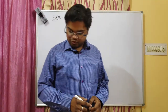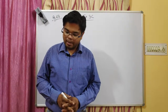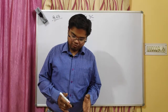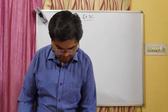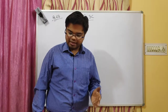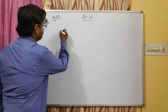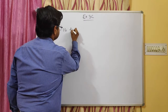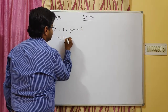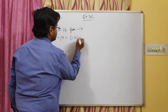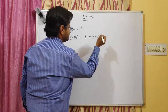Question number four: subtract minus 16 from minus 14. When you see a 'from' operation, you write it as minus 14 minus of minus 16. This becomes minus 14 plus 16, and the answer is 2.